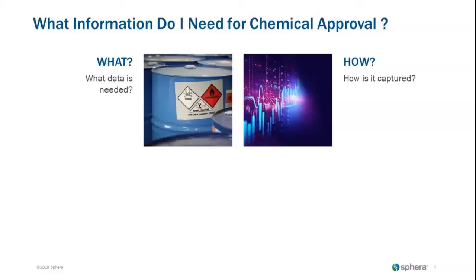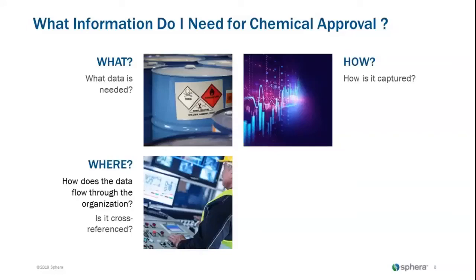The next thing to know is how is it captured. Key to capturing the data: you can have a lot of data, but you don't need all the data available related to your chemical — you just need to capture certain data points. How does the data need to flow in your organization? Who needs to see that data? Does that data need to be cross-referenced against something?